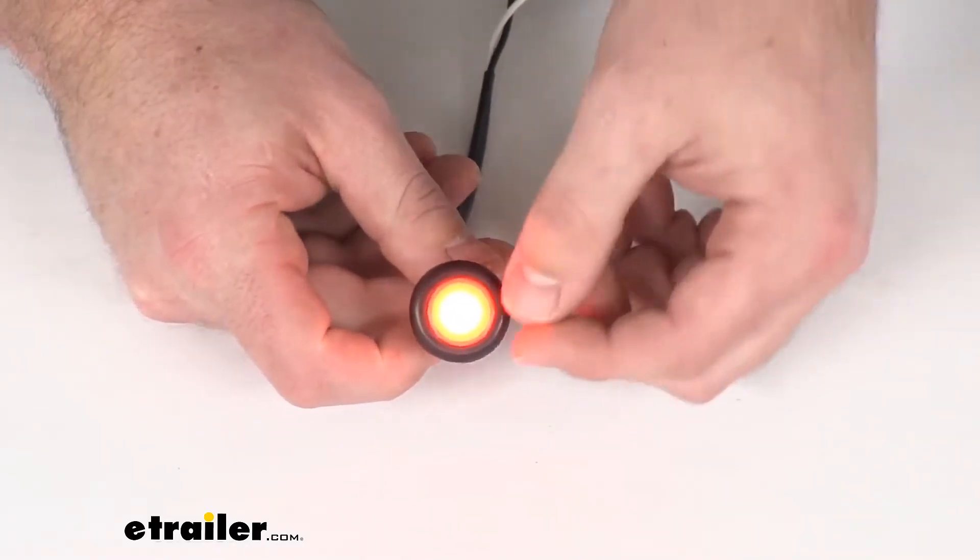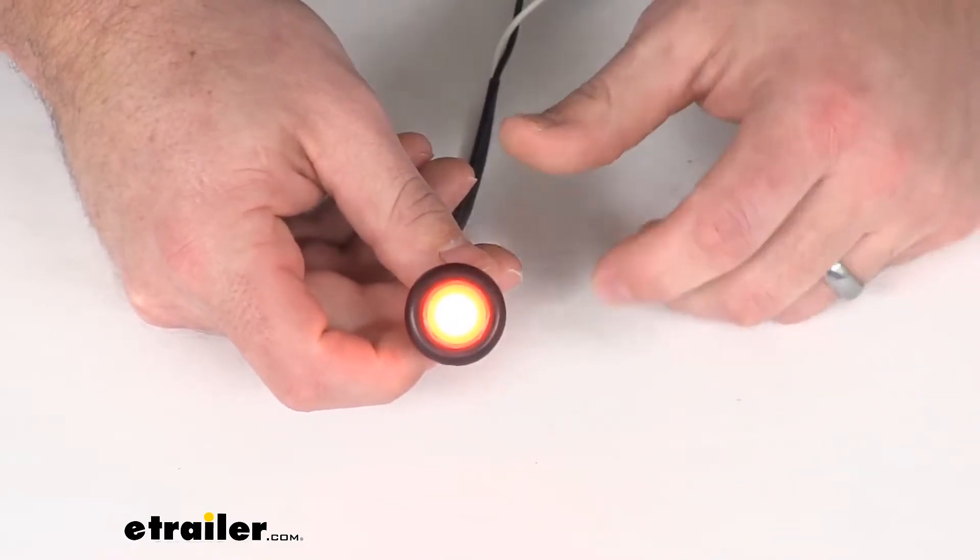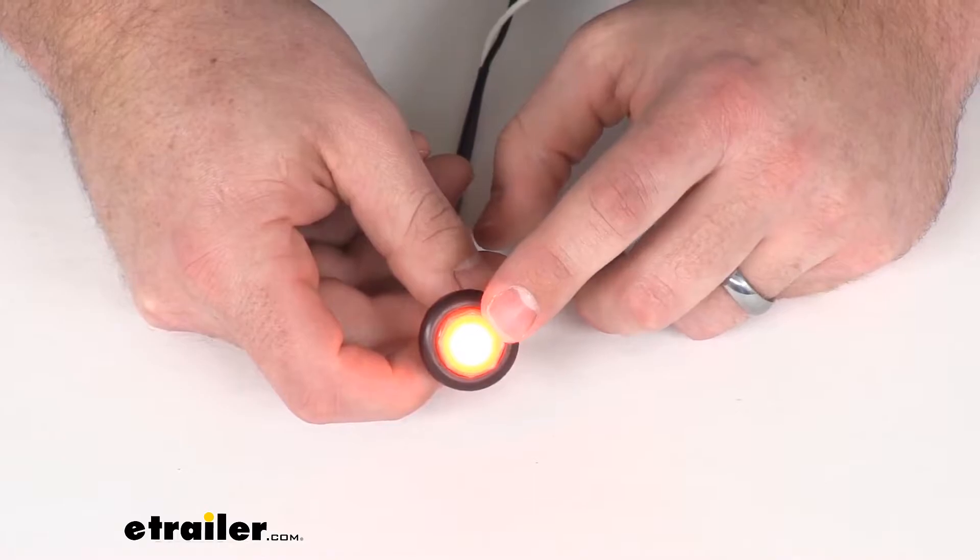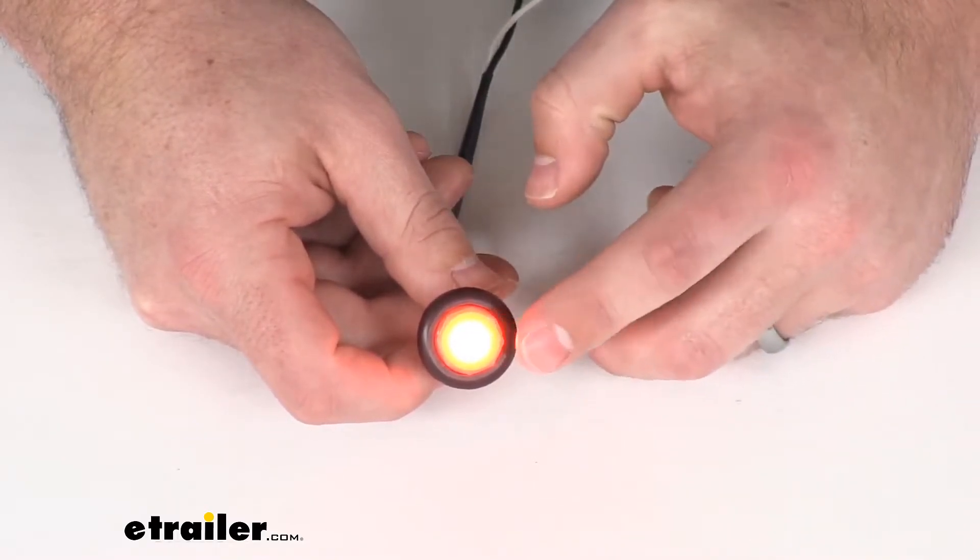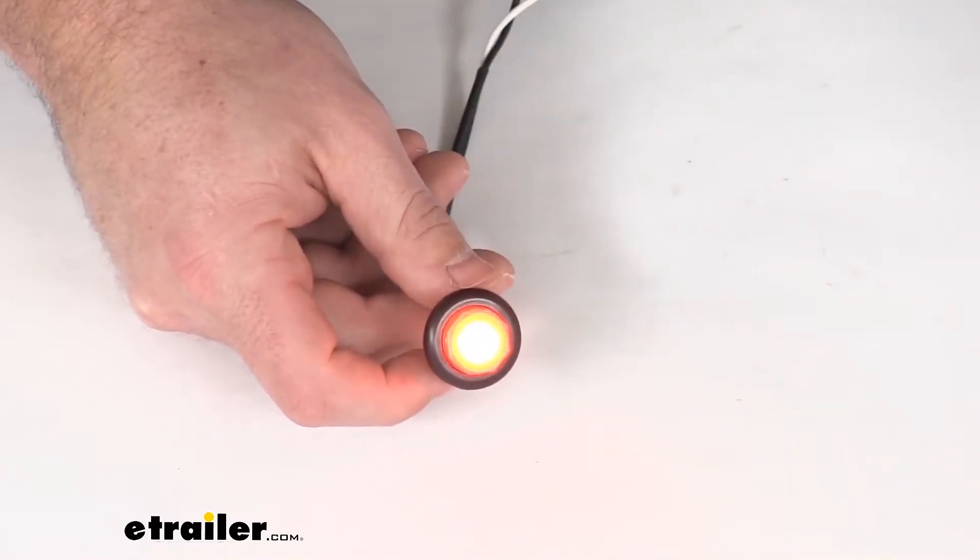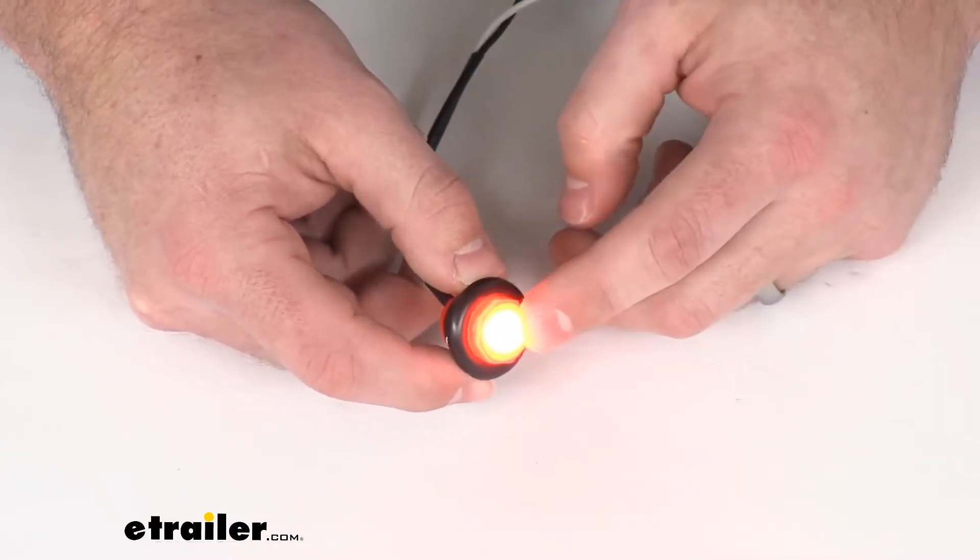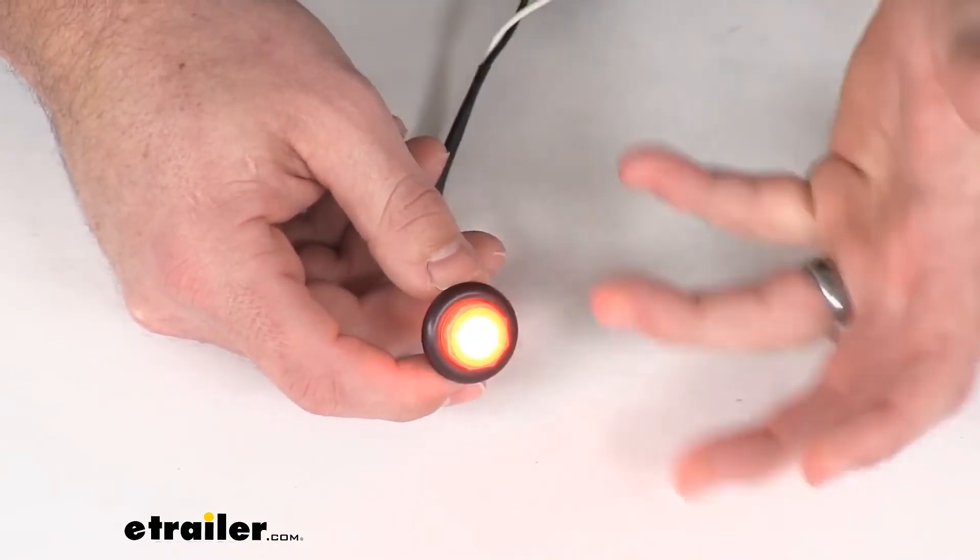They don't have the brittle filament inside that tends to break on the incandescents, so they are going to last about 50 times longer than your incandescent lights do. This one does have a lifetime warranty on the LEDs. Plus, they're more efficient, so you're going to get a brighter light with less power draw.